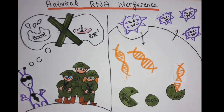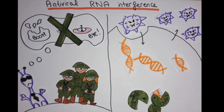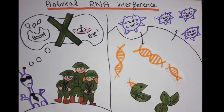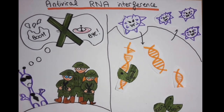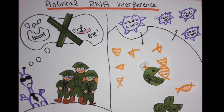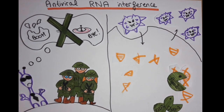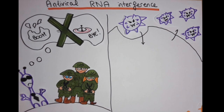Dicer2 recognizes the viral RNA, cuts it into pieces, and, helped by R2D2, gives them to Ago2. Ago2 is like a soldier specialized in tearing nodes apart. It will use the pieces of RNA to recognize similar RNAs and destroy them, so that the virus can no longer replicate.